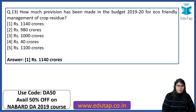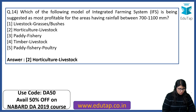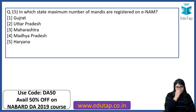Which model of integrated farming system is being suggested as most profitable for areas having rainfall between 700 to 1100 mm? The right answer is Horticulture Livestock. Next: in which state is the maximum number of mandis registered on E-NAM? The right answer is Uttar Pradesh.